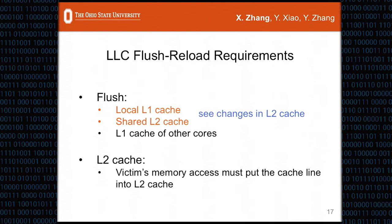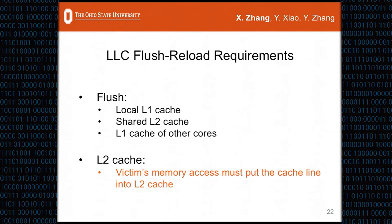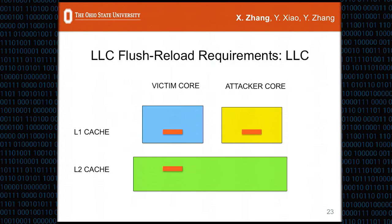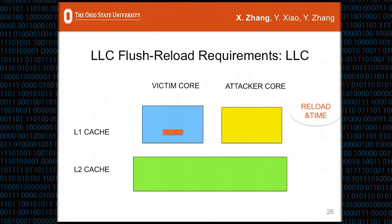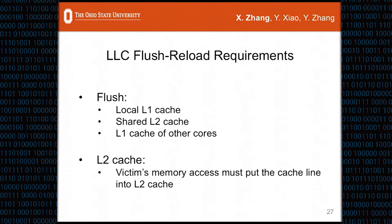If the flush did not flush the L1 cache of other cores, the cache line would remain in the victim's L1 cache after the flush, and when the attacker does the reload and measures time, the timing would always be memory access time. Similarly, if the victim's memory access did not put the cache line into the L2 cache, after the flush all cache lines would be flushed out, but during the idle period when the victim visits the cache line again it will only be present in L1. So the attacker's reload timing would always be memory access time.